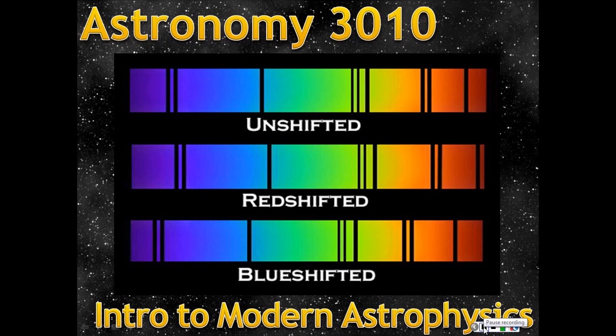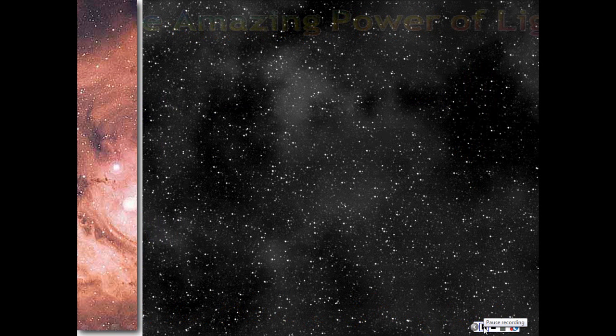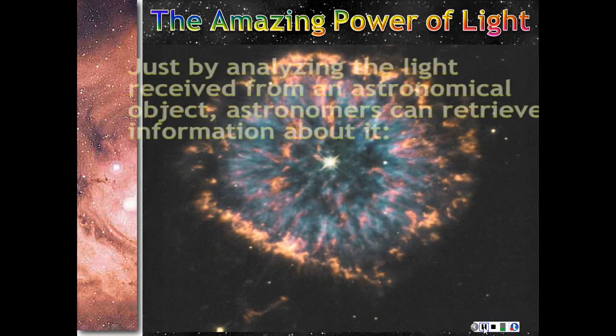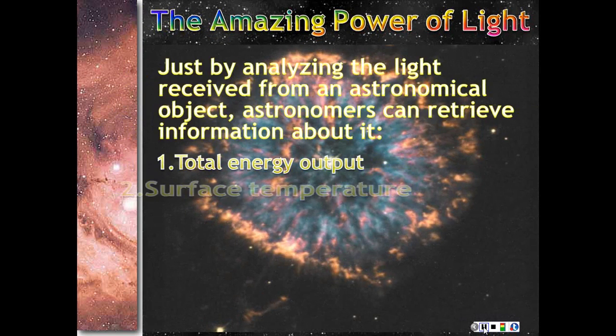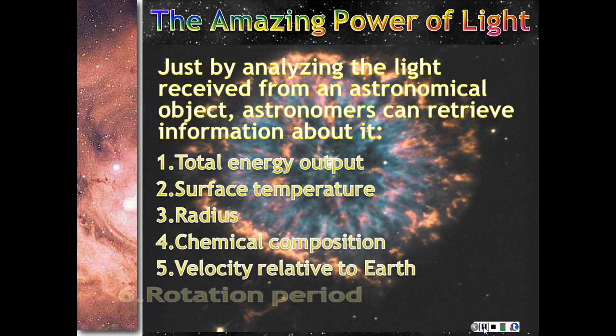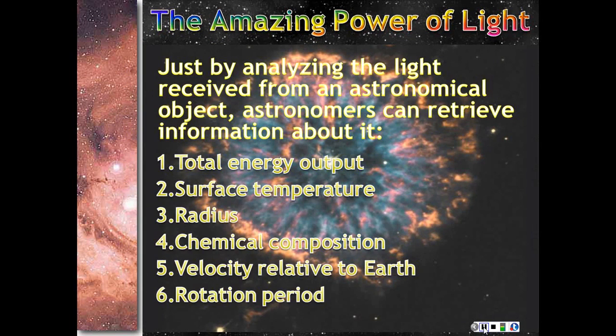This week we're going to be talking about light and matter. This is really important because when we do astronomy, really all we have is light and how light interacts with matter. By analyzing the light we receive from an object like this planetary nebula, we can work out things like how much energy it's putting out, temperature, size, what it's made of, its speed relative to us, rotation period, and all sorts of other things. We need to understand light to understand how it gives us this information.